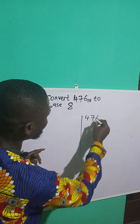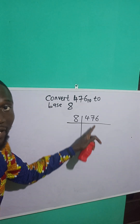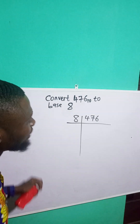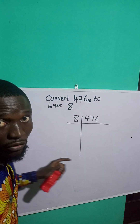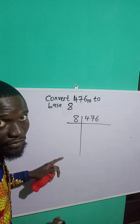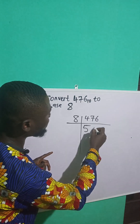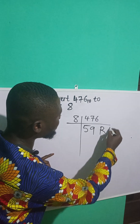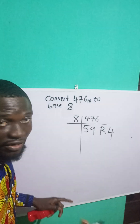476 divided by 8. If 8 people share 476 oranges, they will get 59 each. And it will remain how many? It will remain 4. 4 will remain, right?